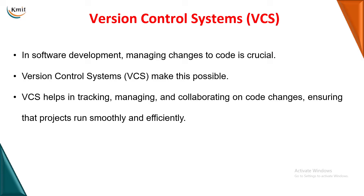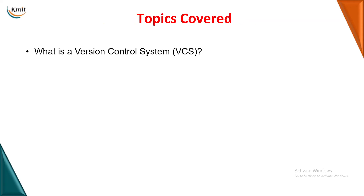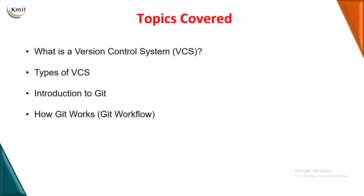Here is where we will be using the version control system. The version control system will help us to track whatever changes we are doing in the code, managing those changes, and it also helps in collaborating with various repositories and databases to ensure our project runs smoothly. In today's session we will cover: what is version control system, how many types we have, what is Git, how Git works, what is GitHub, and its various features.